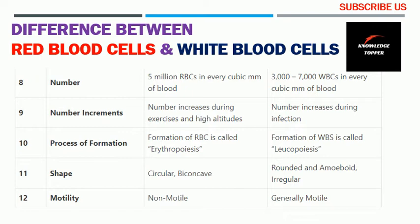The eighth basis for comparison is number. There are about 5 million red blood cells in every cubic millimeter of blood, while there are 3,000 to 7,000 white blood cells in every cubic millimeter of blood. The ninth basis is number increments — red blood cell numbers increase during exercise and at high altitudes.